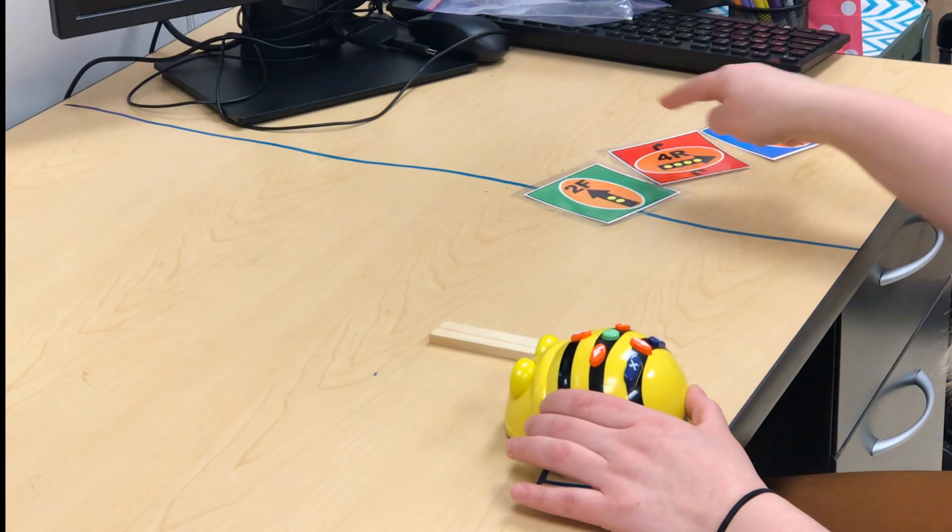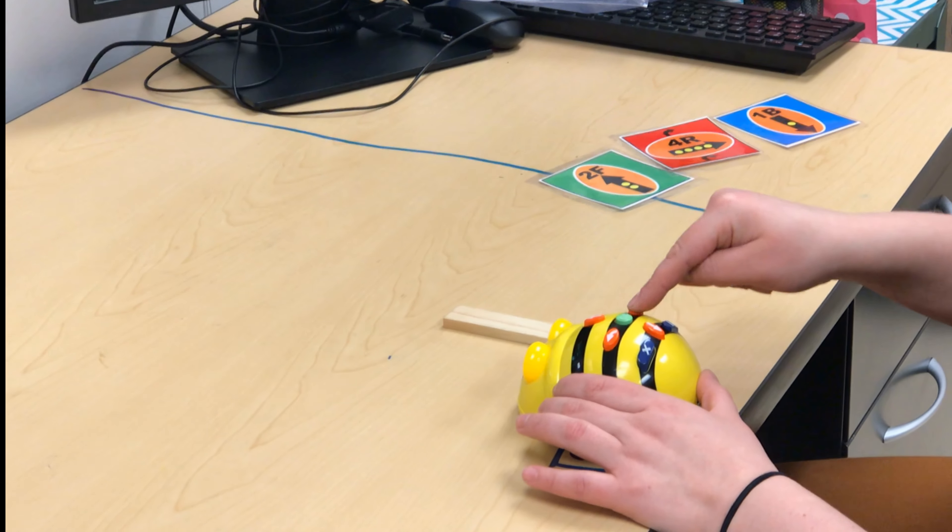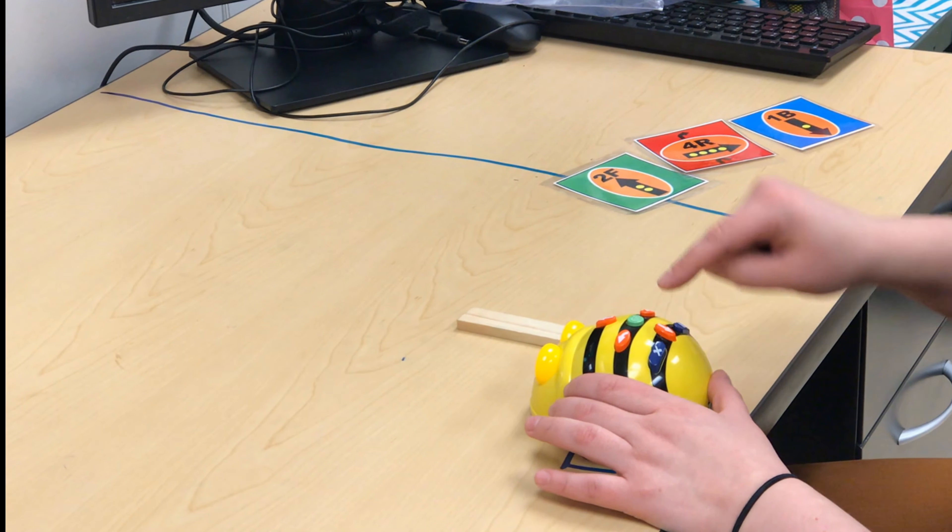Forward two: one, two. Right four: one, two, three, four. Back one. Let's see.